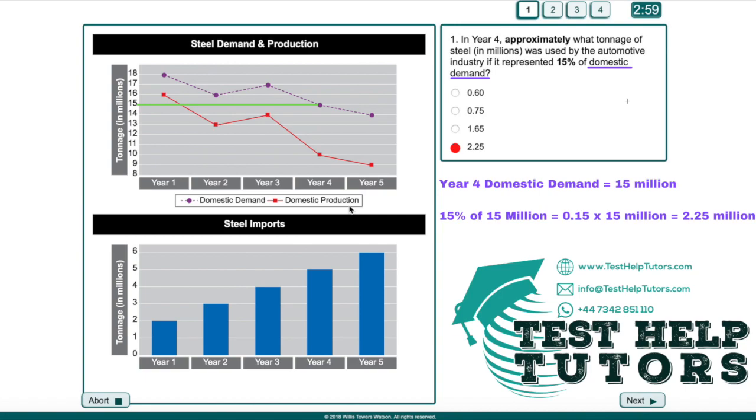The question essentially asks us what tonnage of steel was used by the automotive industry if it represented 15% of domestic demand. So 15% of domestic demand in year 4 was represented by the automotive industry. We need to work out what is this 15% of domestic demand. In short, what is 15% of this value here, 15 million.